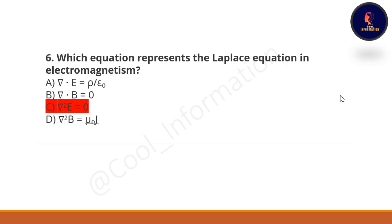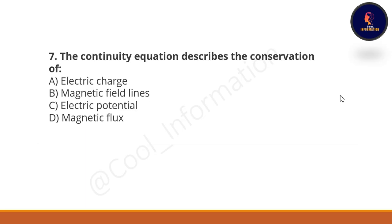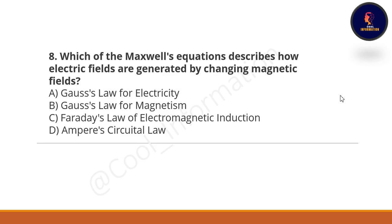All 60 questions are important — do not miss any one. Seventh question: the continuity equation describes the conservation of what? Option A: electric charge. Option B: magnetic field lines. Option C: electric potential. Option D: magnetic flux. The correct option is A — electric charge.